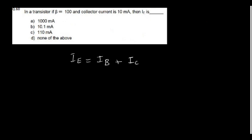In a transistor, if beta equals 100 and collector current is 10 mA, what is IE? IE is the sum of IB and IC. There is only a very slight variation between IE and IC, so we don't need to calculate — it is 10.1 mA.